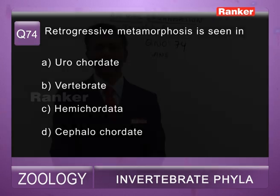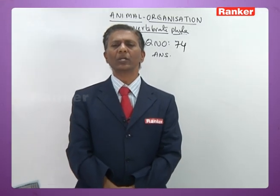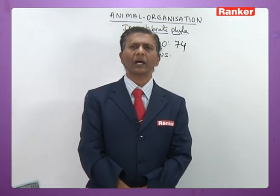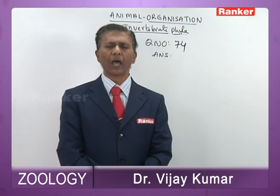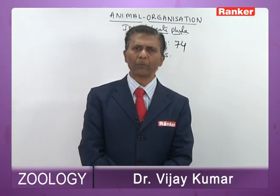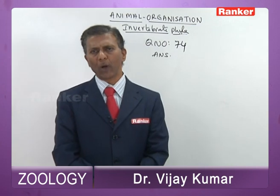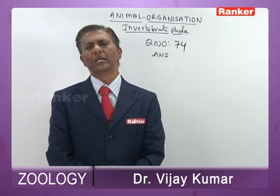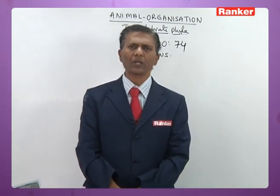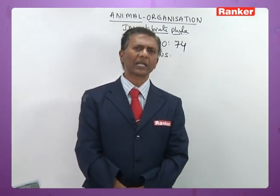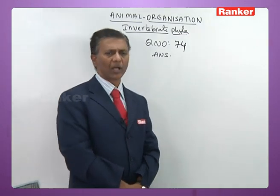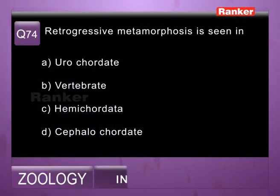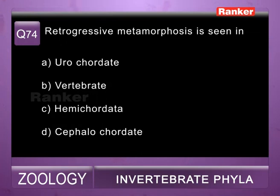Question seventy-four: retrogressive metamorphosis is seen in — a) Urochordata, b) Vertebrata, c) Hemichordata, d) Cephalochordata. Retrogressive metamorphosis is noticed in Urochordata — the tadpole larva exhibits all advanced characters, but during metamorphosis loses advanced characters and gains primitive characters. This is referred to as retrogressive metamorphosis. So seventy-fourth question correct answer is a) Urochordata.